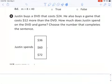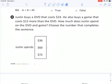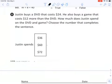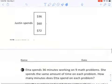Number eight, Justin buys a DVD that costs $24. He also buys a game that costs $12 more than the DVD. How much money does Justin spend on the DVD and game together? Choose the number that completes the sentence. So then you have to Justin spends and then circle the correct answer there. If you think it's 60, you do 60, or if you think it's 72, or 36, whatever, just circle the correct answer.